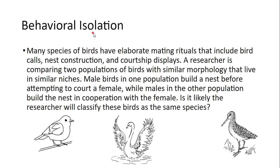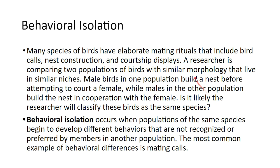The second type of isolation event that can lead to speciation is behavioral isolation. Many species of birds have elaborate mating rituals that include bird calls, nest construction, and courtship displays. A researcher comparing two populations of birds finds that males in one population build a nest before courting a female, while males in the other build the nest in cooperation with the female. Behavioral isolation occurs when populations begin to develop different behaviors that are not recognized or preferred by other members of that population.